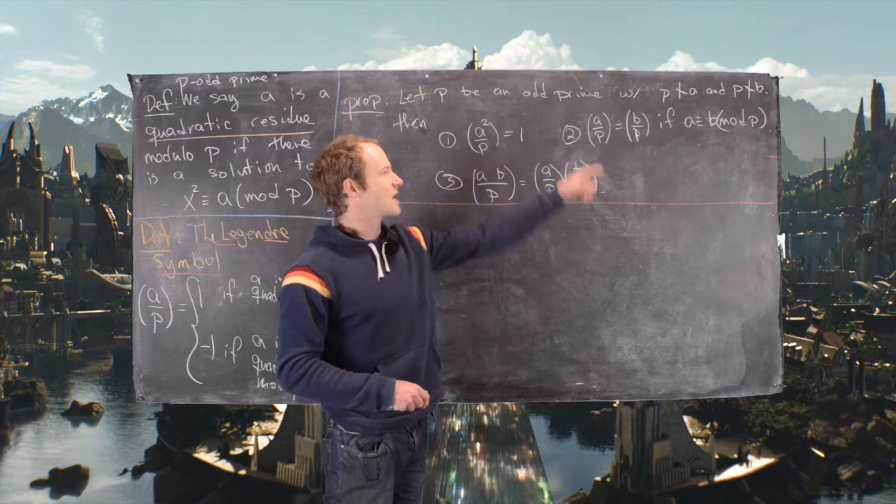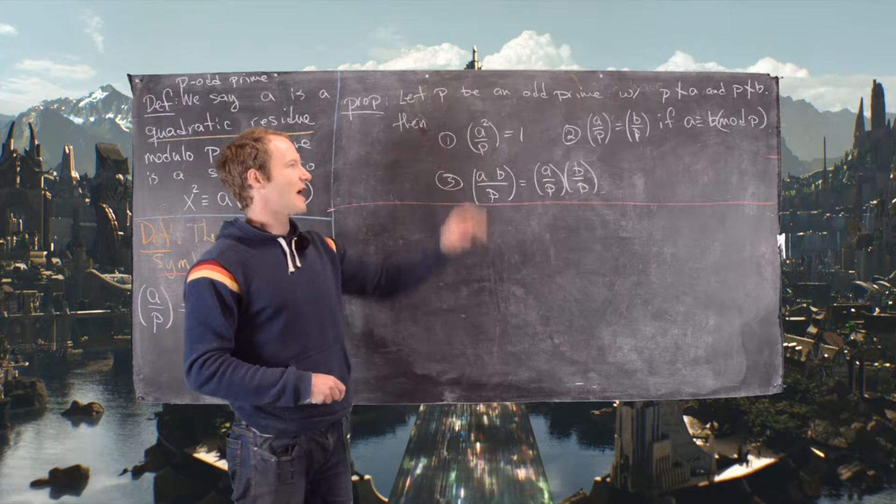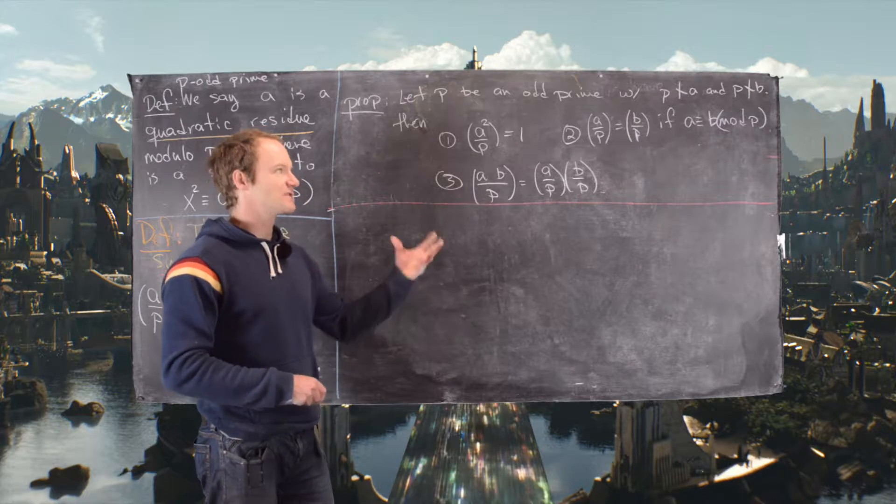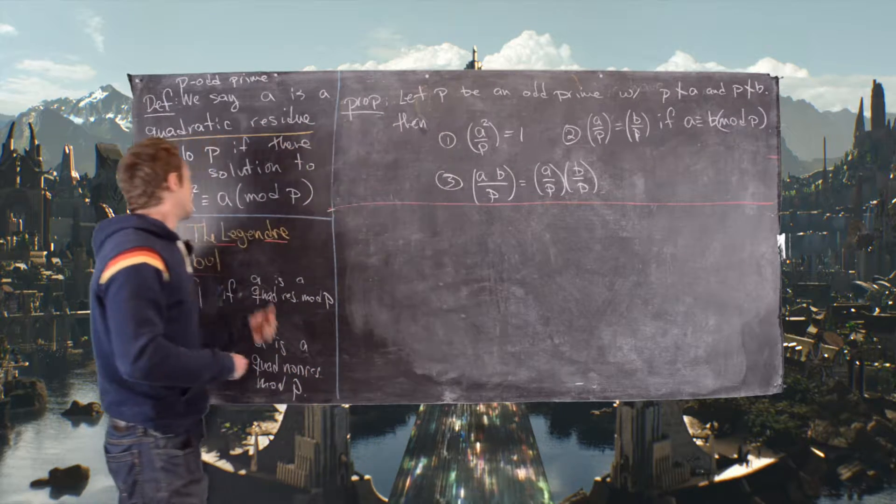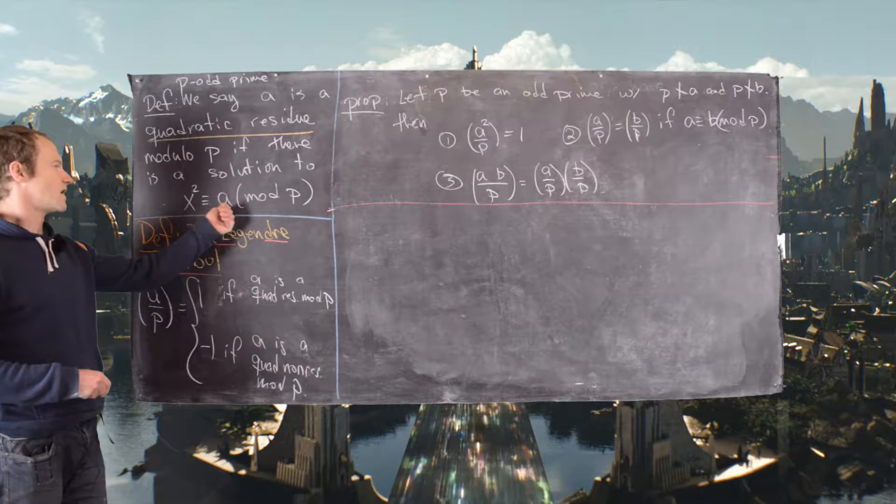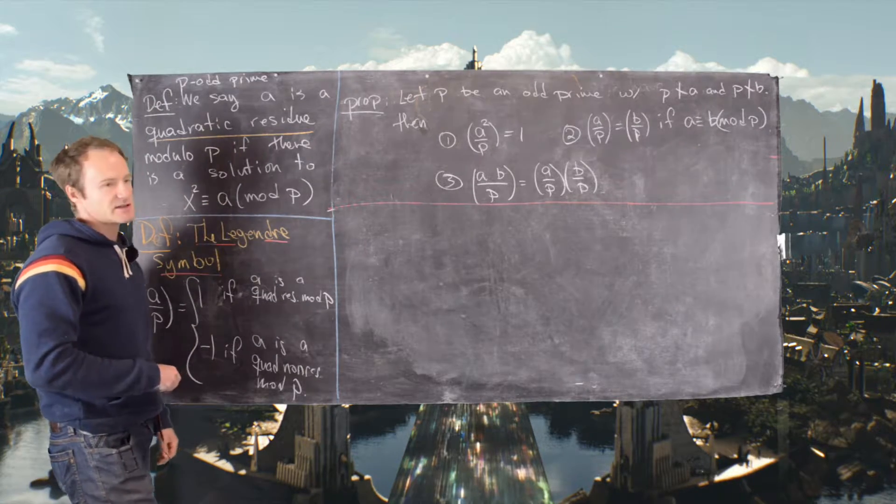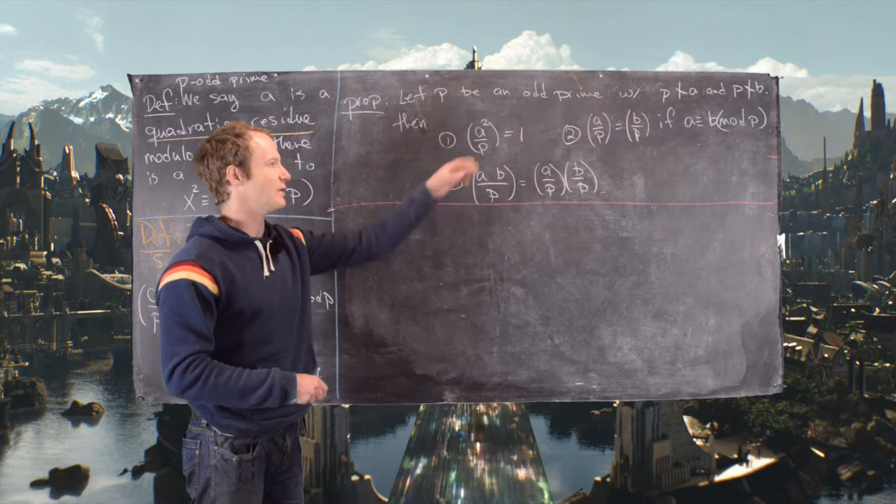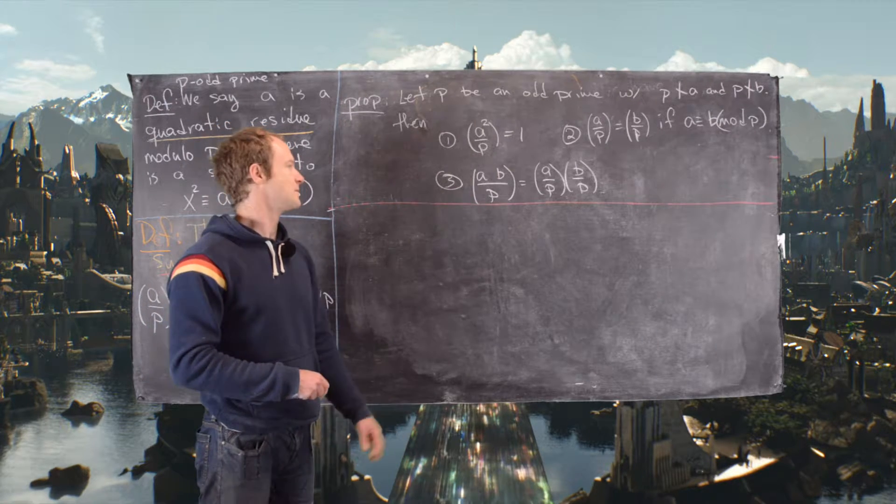And then if a is congruent to b mod p, we have a by p is equal to b by p. That's also obvious because the congruence x squared is congruent to a mod p is equivalent to the congruence x squared is congruent to b mod p when those guys are the same.